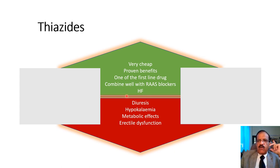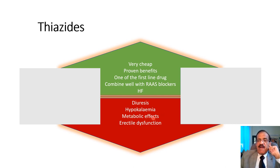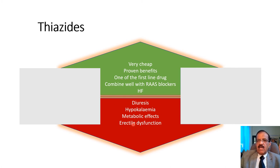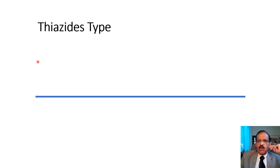The downside of thiazides is that being diuretics they cause some diuresis, but these are very mild diuretics so after the first few days there should be hardly any noticeable diuresis. They may cause hypokalemia and metabolic effects like dyslipidemia, increase in uric acid, and increase in blood glucose. However, these are generally very mild effects and these days we use diuretics in relatively smaller doses, so most patients would not develop clinically relevant side effects. They may also cause erectile dysfunction in men, like many other antihypertensive drugs.